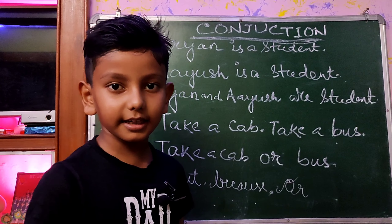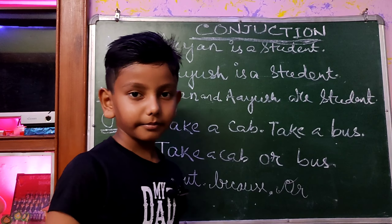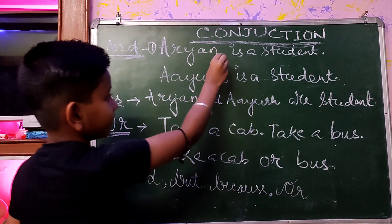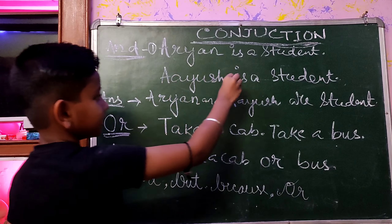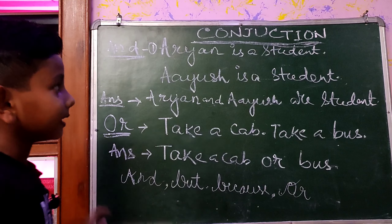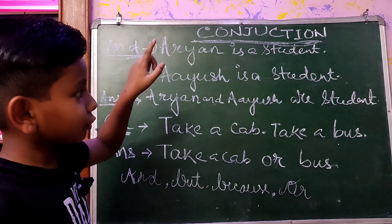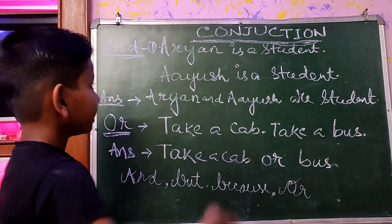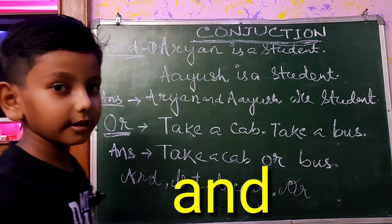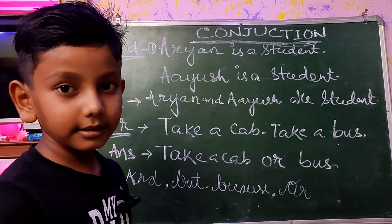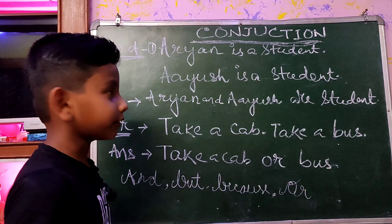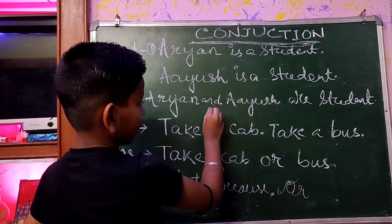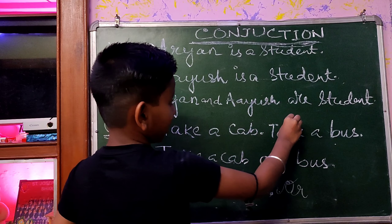So let's take some sentences for example. 'Adrian is a student. Iyuse is a student.' So friends, to join these two sentences, we use the conjunction word AND. And the sentence that comes after joining AND is: 'Adrian and Iyuse are students.'